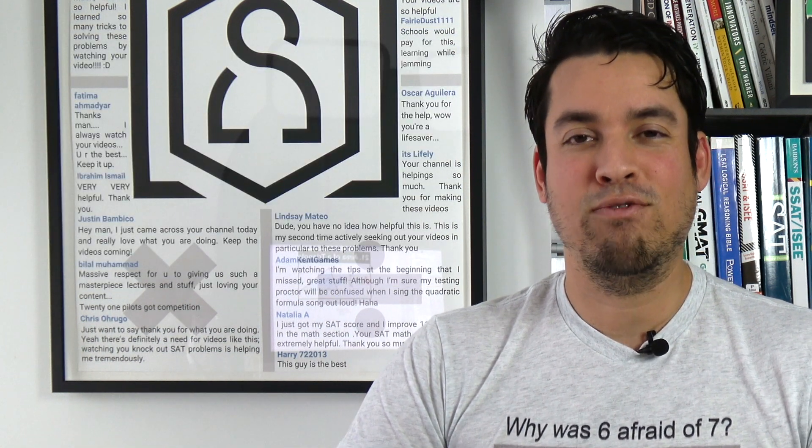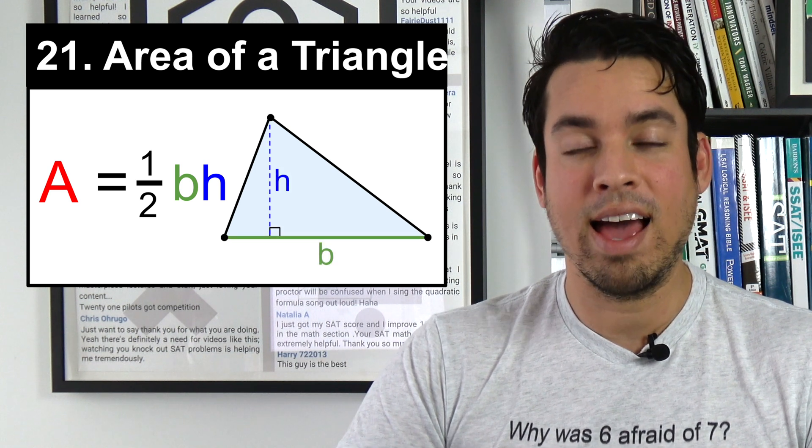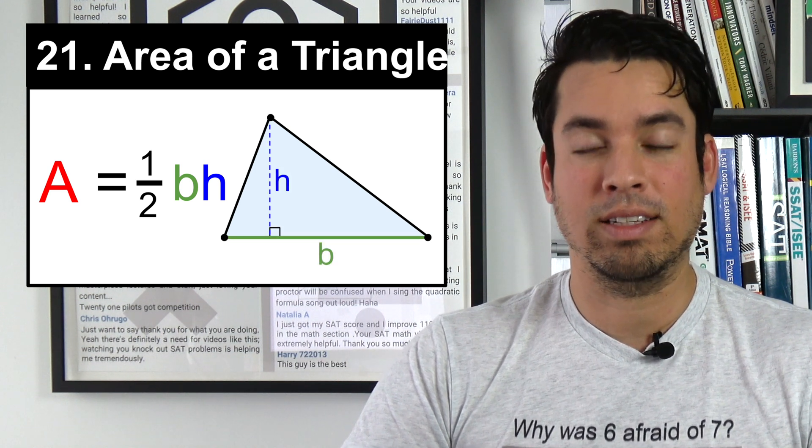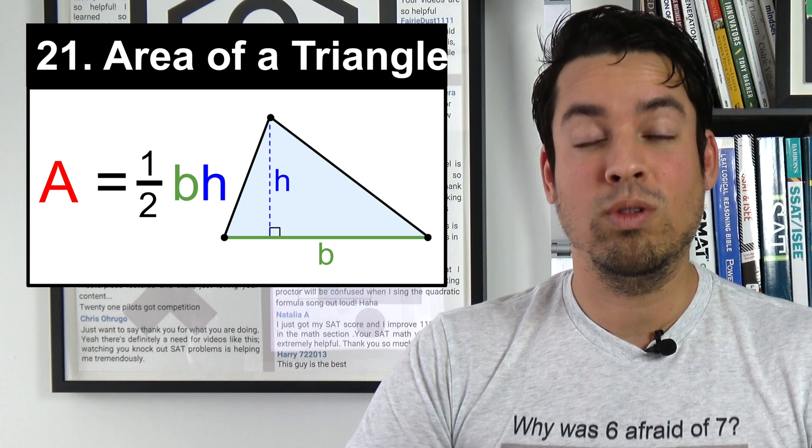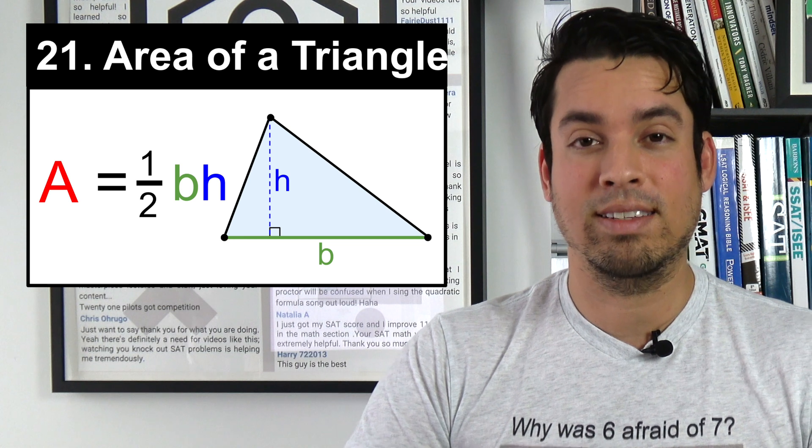Next on the list is the formula for the area of a triangle, which is simply one half base times height. This is likely a formula that you learned years ago, but just make sure that you have it down when going into the test.